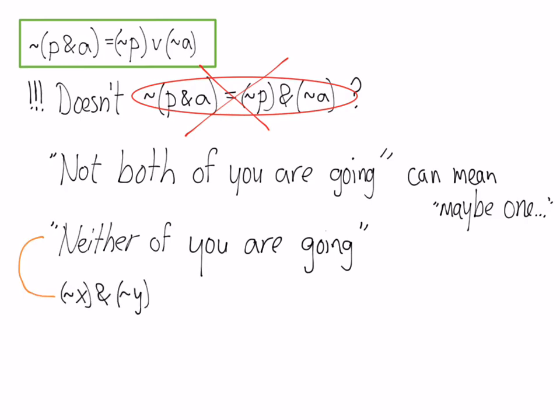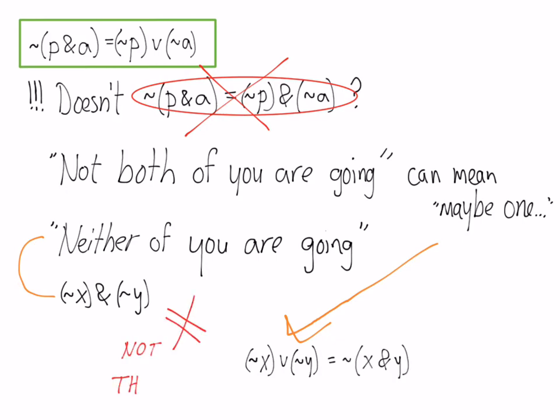NEITHER of you are going says: definitely NOT you are going, and NOT the other person is going. The first statement, 'NOT both of you are going,' means either one of you is not going or the other is not going. Using the equivalents from the previous screen, that shows that these are not the same.